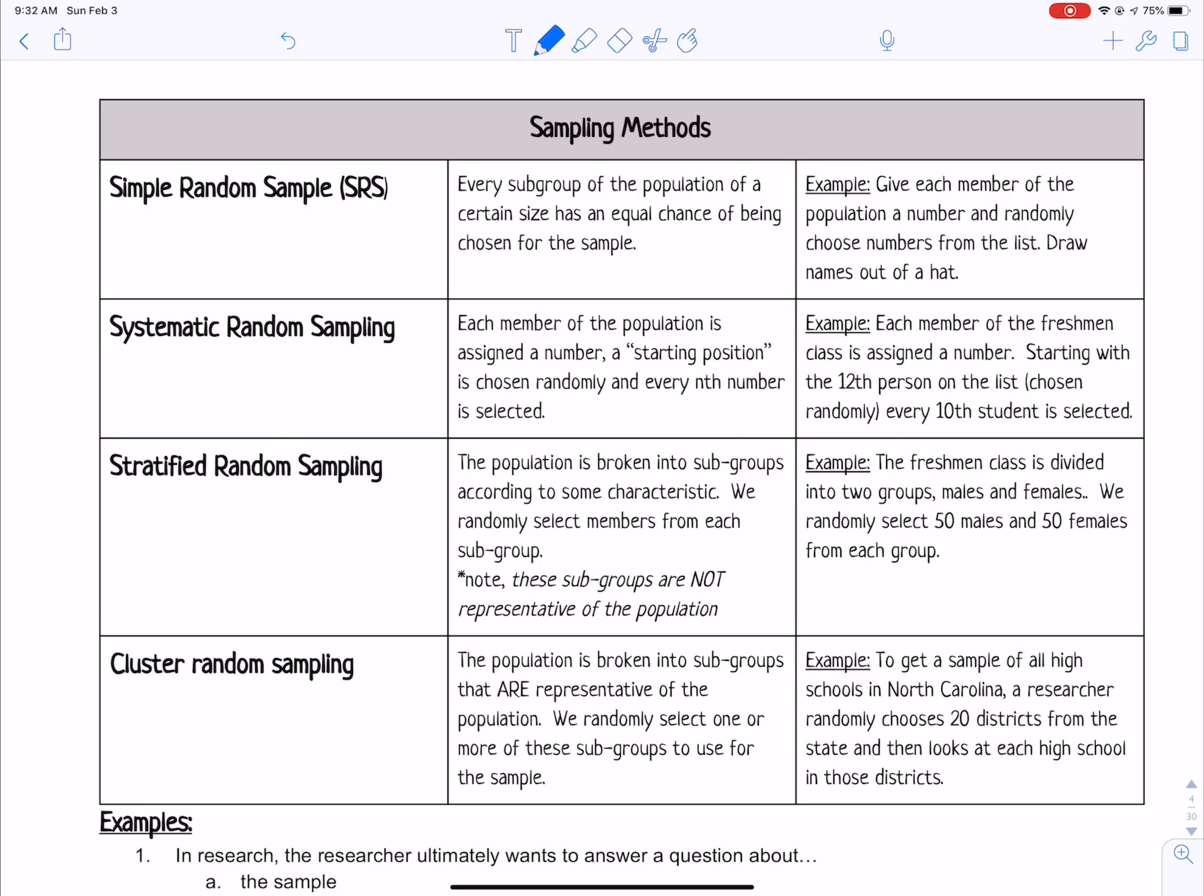Let's talk about sampling methods. A simple random sample is when you, for instance, take all the members of the class and put them in a hat and draw out some names.